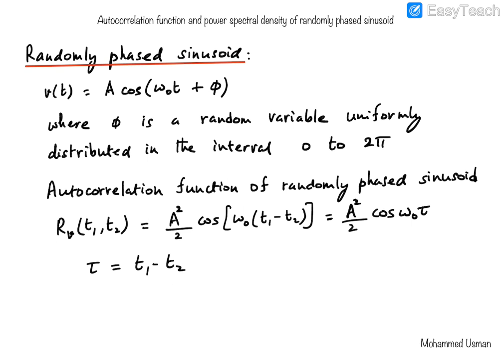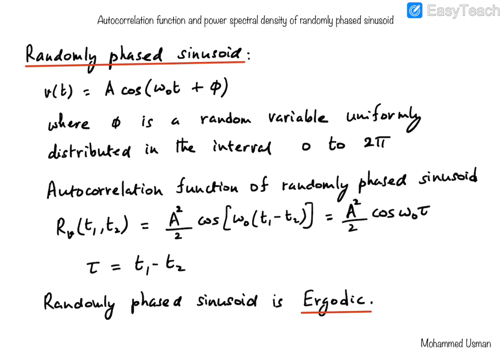Next, we will compute the power spectral density of the randomly phased sinusoid using its autocorrelation function. The power spectral density gives us the power distribution in each of the frequency components present in the random process. To establish the relationship between the autocorrelation function and power spectral density, we use the fact that the randomly phased sinusoid is an ergodic process. Since it is ergodic, the autocorrelation function and the power spectral density are a Fourier transform pair. This relationship is called the Wiener-Khinchin theorem.